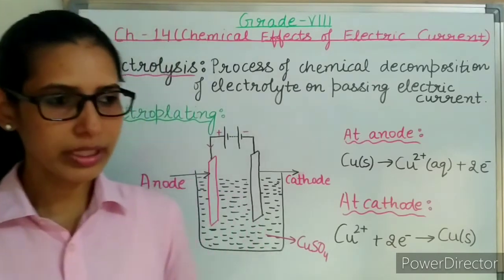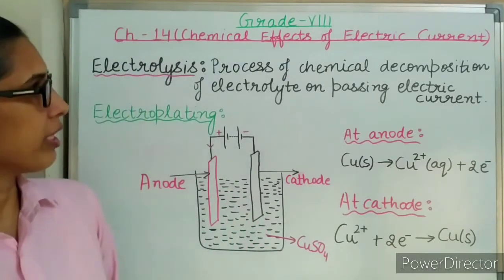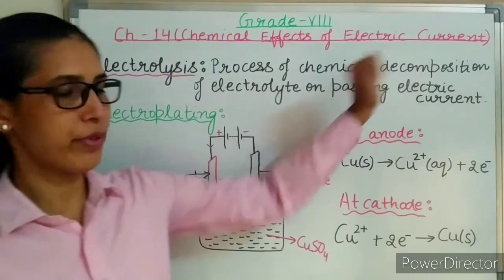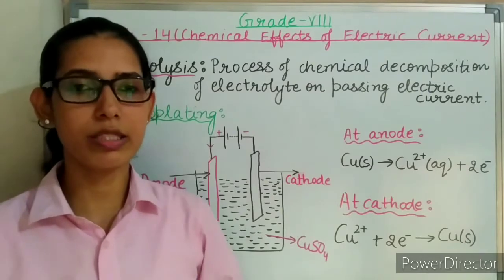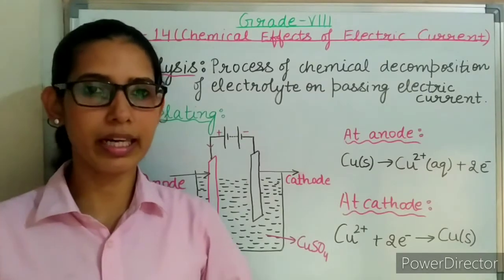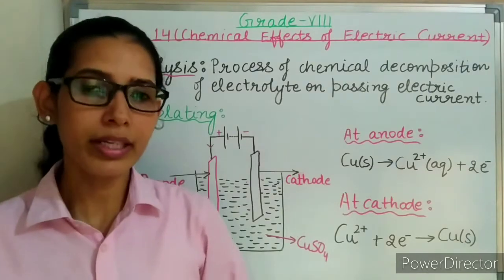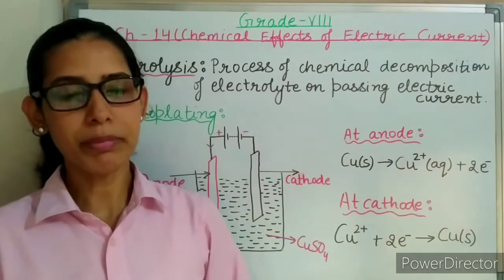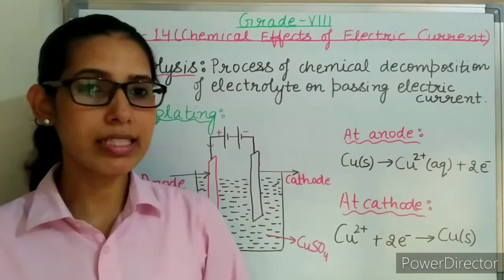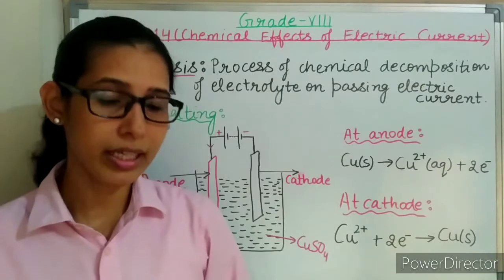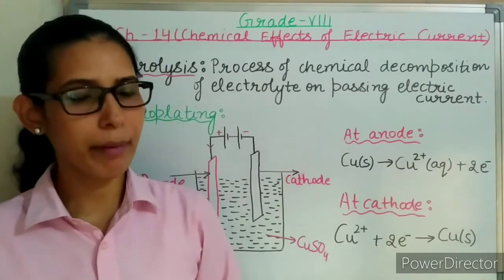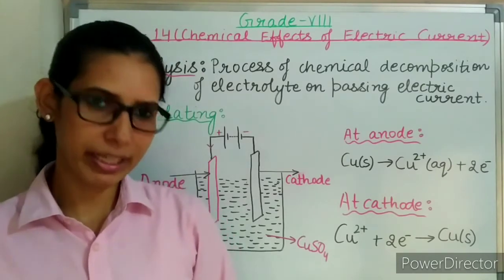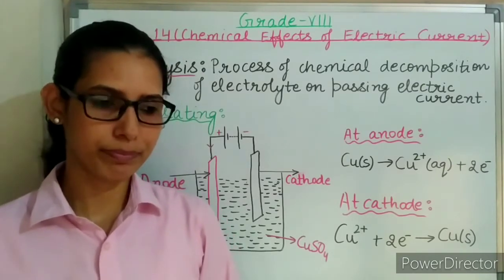Today in this video, we will study the chemical effects of electric current. That means when electric current is passed through a conducting liquid, it causes some kind of chemical changes. This phenomenon is known as the chemical effects of electric current.